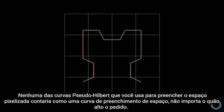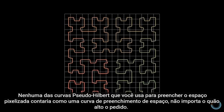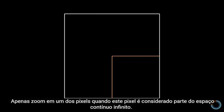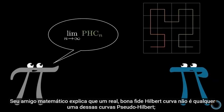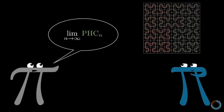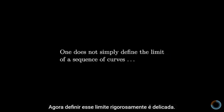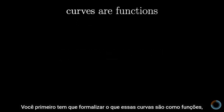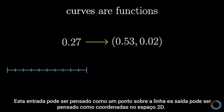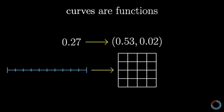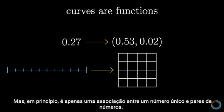None of the pseudo-Hilbert curves would count as a space-filling curve, no matter how high the order. Just zoom in on one of the pixels. When this pixel is considered part of infinite, continuous space, the curve only passes through the tiniest zero-area slice of it, and it certainly doesn't hit every single point. Your mathematician friend explains that an actual bona fide Hilbert curve is not any one of these pseudo-Hilbert curves. Instead, it's the limit of all of them. Now, defining this limit rigorously is delicate. You first have to formalize what these curves are as functions — specifically, functions which take in a single number somewhere between zero and one as their input, and output a pair of numbers. This input can be thought of as a point on the line, and the output can be thought of as coordinates in 2D space, but in principle it's just an association between a single number and pairs of numbers.